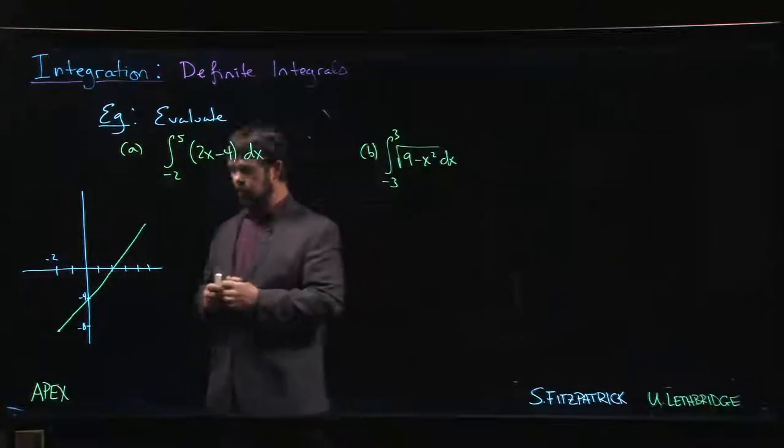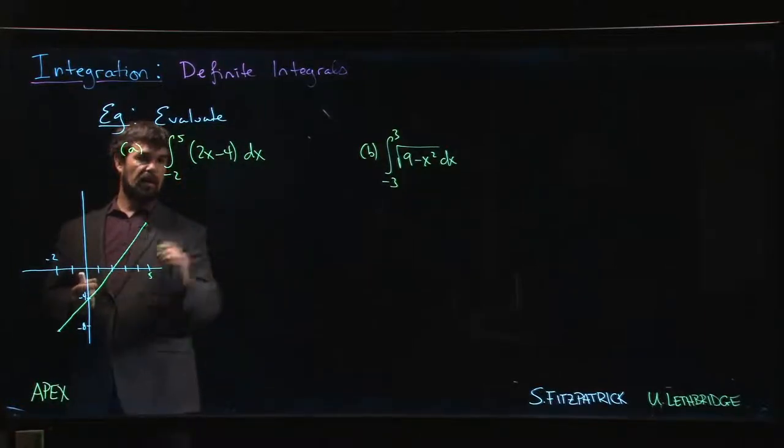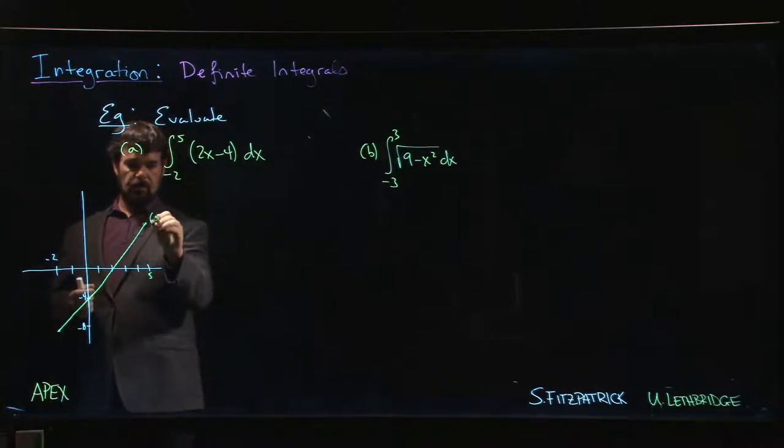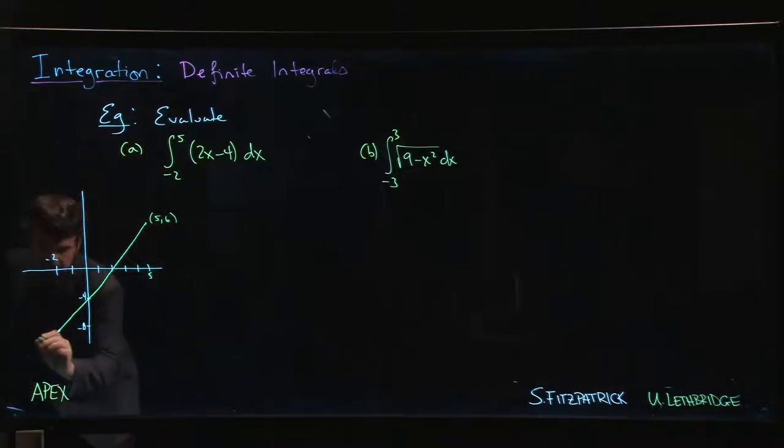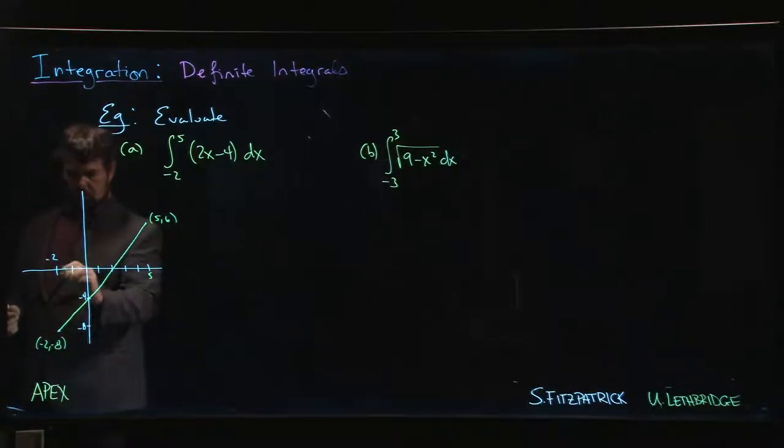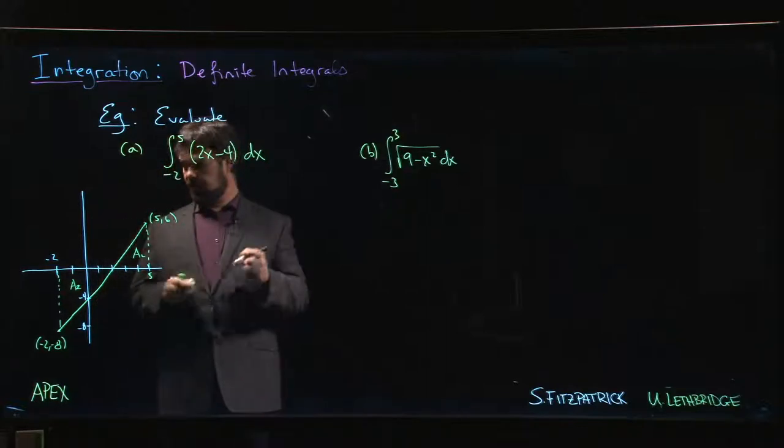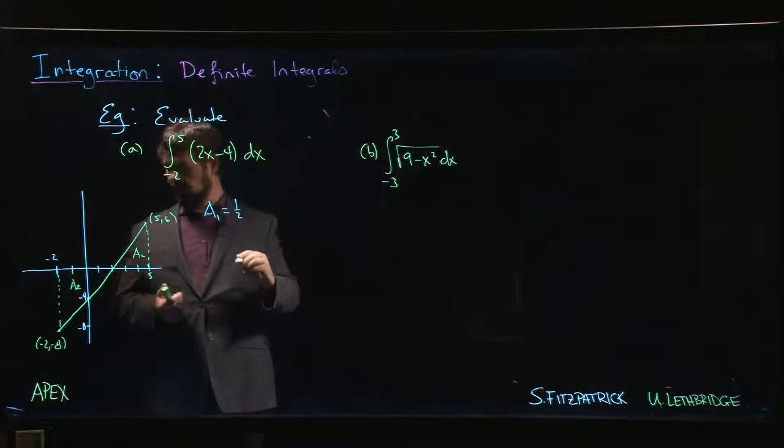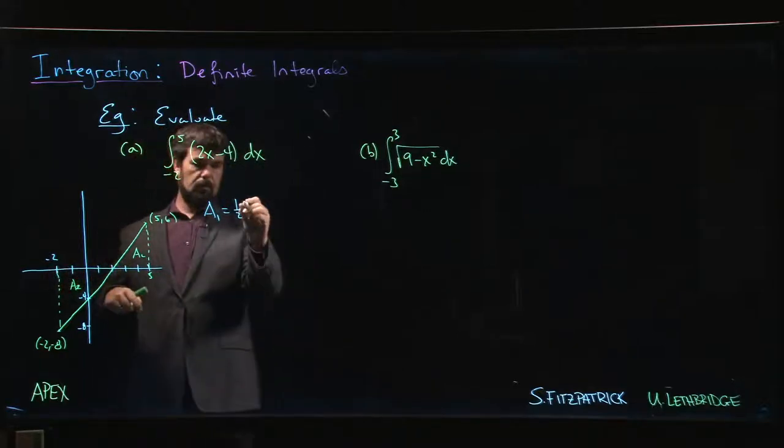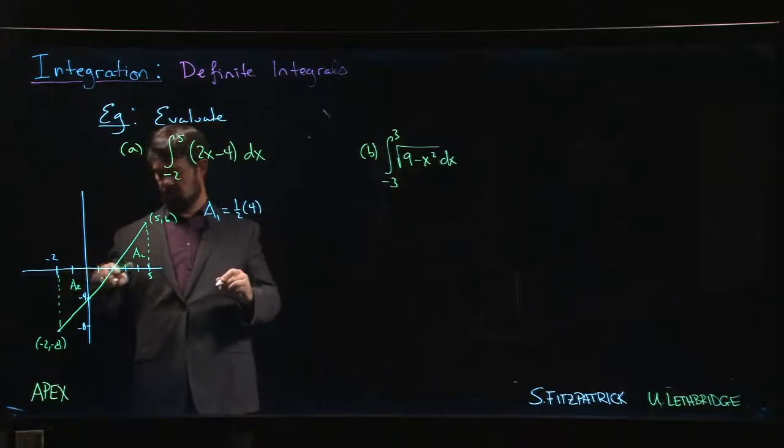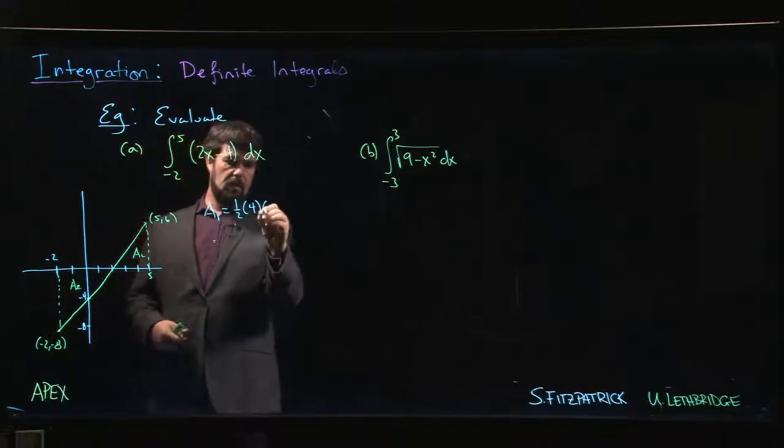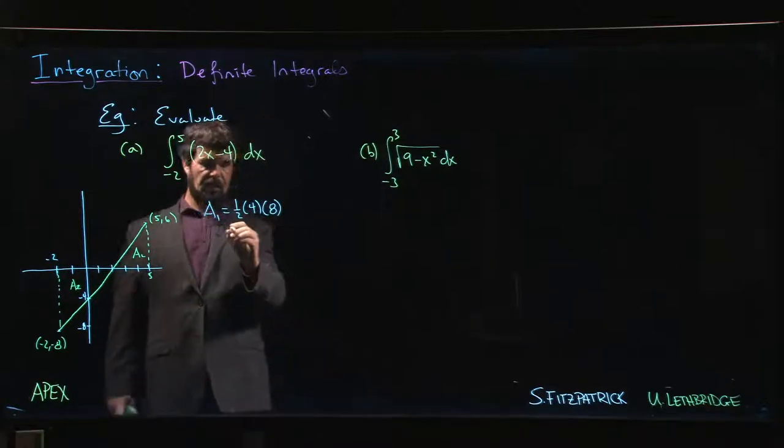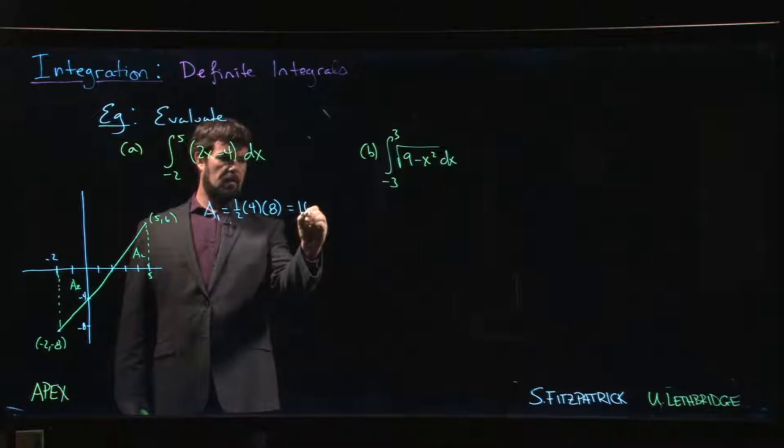Alright. So, if we want to understand this area, well, what we can do is say, alright, this is at 5, right? So, when x is equal to 5, 2 times 5 is 10 minus 4, so 5, 6. This point down here is at minus 2 and minus 8. And so, we can work out areas for these two triangles. So, what's the first area? The first area, area 1, 1 half. What's the base? It's the distance from minus 2 to plus 2, which is 4. The height is going to be minus 8. Well, the height is 8, right? Because we're just thinking in terms of area here. So, we get 16.